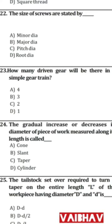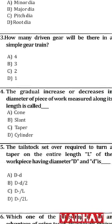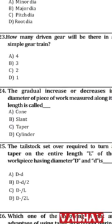Question 23: How many driven gears are there in a simple gear train? The answer is one — in a simple gear train there is only one driven gear.